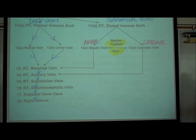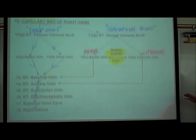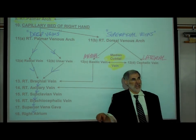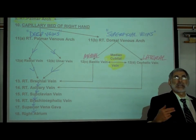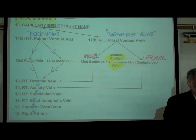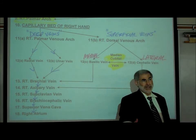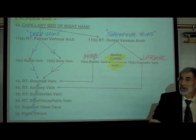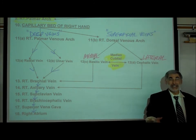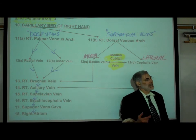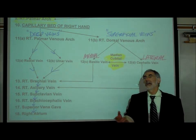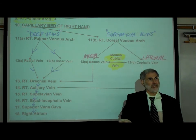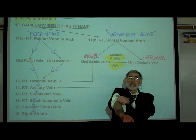The most important of all these is the median cubital vein, which is an anastomosis — meaning an interconnection, as defined on page N2 — between the basilic and the cephalic.